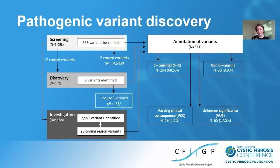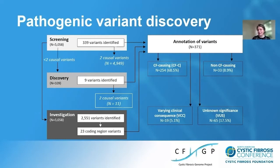This figure summarizes the study design and results. First, we wanted to screen the CFGP for known CFTR variants. For those people who do not have diagnostic genotypes, we looked for additional loss of function variants within CFTR. And for the entire dataset, we wanted a better understanding of the coding region variation within CFTR. Once we collected all those variants, they were annotated using the CFTR2 criteria and the ACMG criteria to classify them as causal, having unknown significance, or having varying clinical consequence.